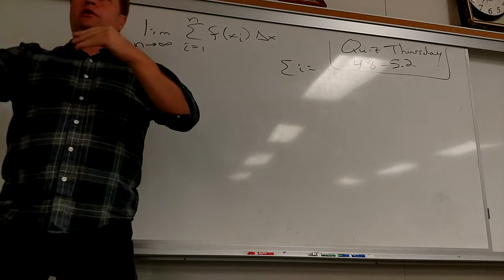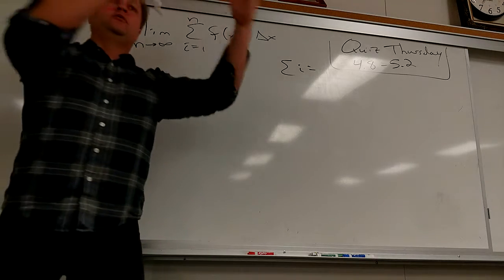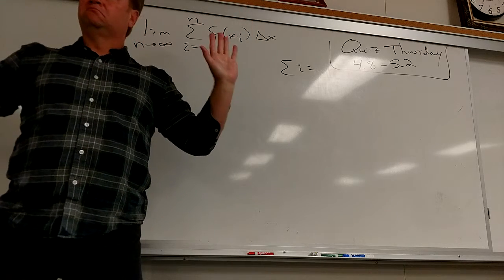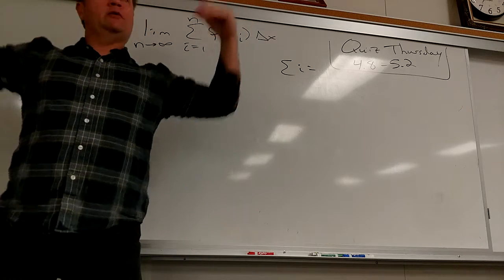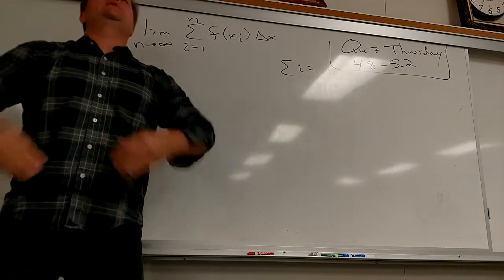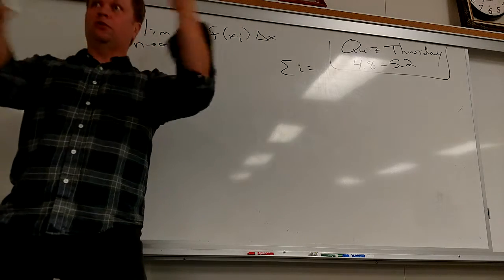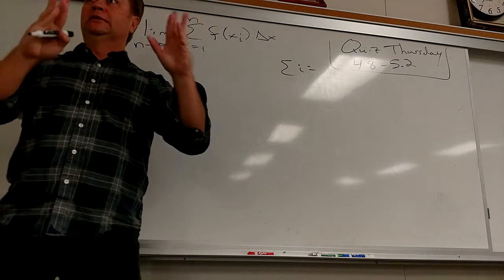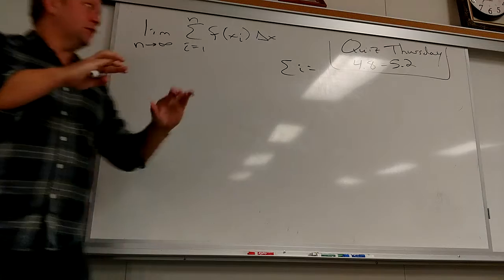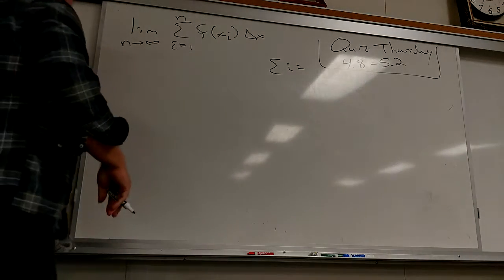Today we're going to finish finally making the connection between antiderivatives — which are really kind of easy to get for most functions, they're just the opposite of derivatives — and this idea of area. So instead of doing this long process where you've got the sum of i, sum of i squared, sum of i cubed, we're going to try to develop some connections to make a shortcut.